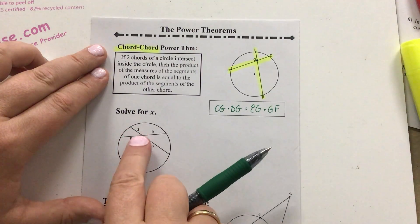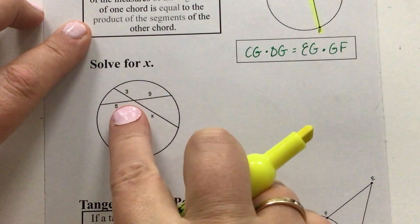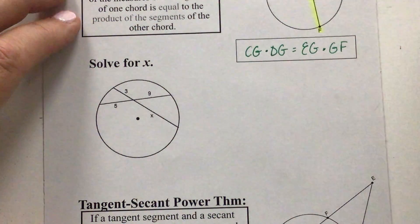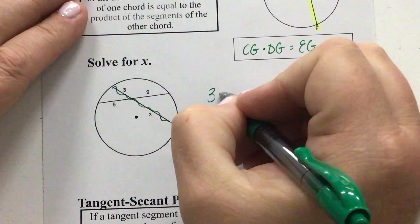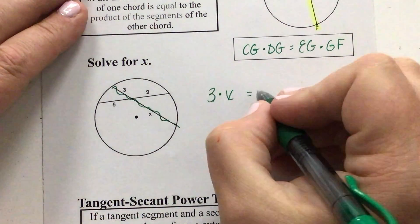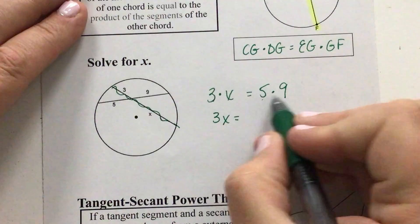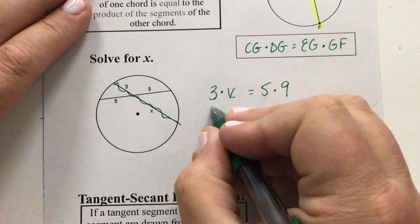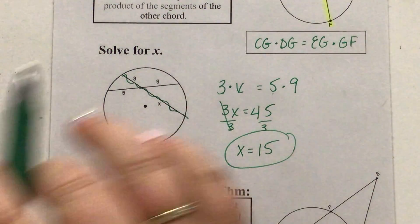Looking at this example, I've got two chords that intersect inside the circle. One chord has pieces of three and X, so I take three times X equals the product of the pieces of the other chord, which are five and nine: five times nine. Three times X is 3X, and five times nine is 45. Dividing both sides by three, X equals 15. This is the chord-chord power theorem because we have two chords.